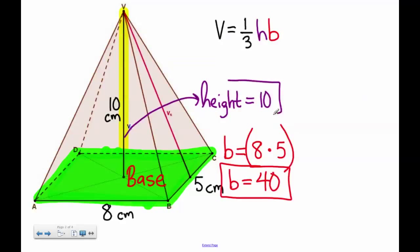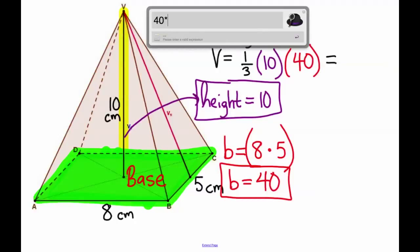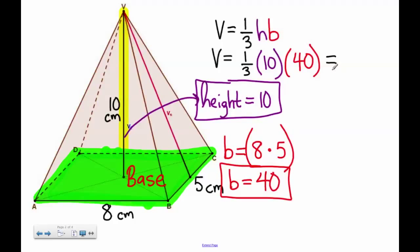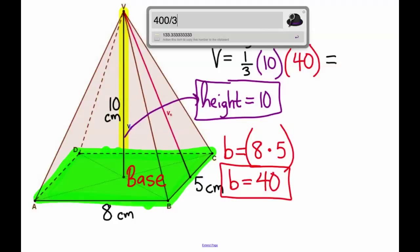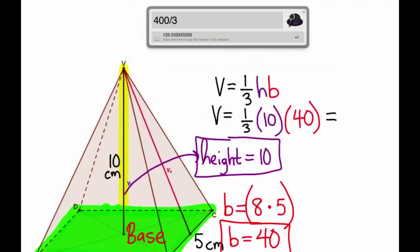And then you plug all of those things back into the original equation, so that V is going to equal one-third of the height, which is 10, times the base, which is 40. When you multiply 10 times 40, you get 400. And then to solve for one-third, you have to divide by 3, which is 133.33.